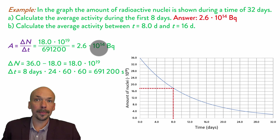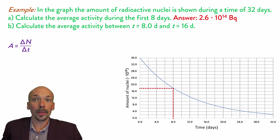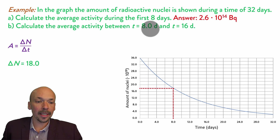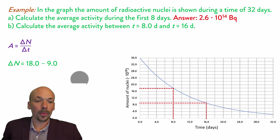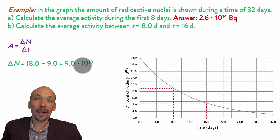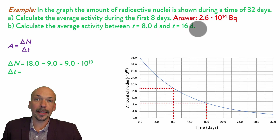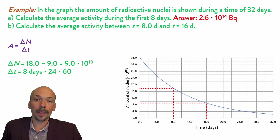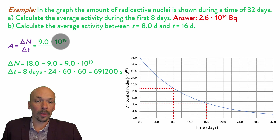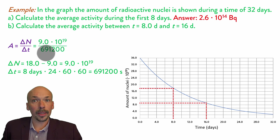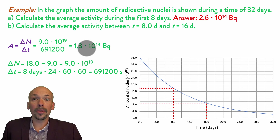Now we will continue with question b. We will use the same equation but with different numbers, because now we have to look between 8 and 16 days. At 8 days we had 18 times 10 to the power of 19 nuclei, and after 16 days we only had 9 left. So we do 18 minus 9, which equals 9 times 10 to the power of 19. The time interval between 8 and 16 days is 8 days — again converted to seconds by multiplying by 24, by 60, and by 60, giving 691,200 seconds. So we get 9 times 10 to the power of 19 divided by 691,200 seconds, and our answer is 1.3 times 10 to the power of 14 becquerel.